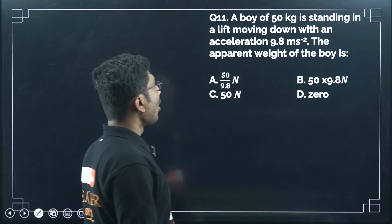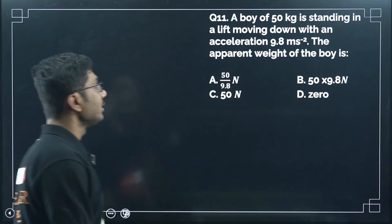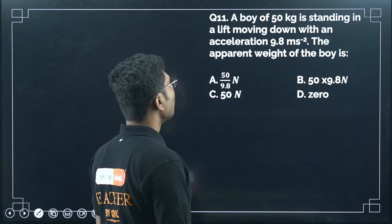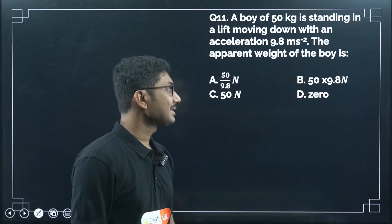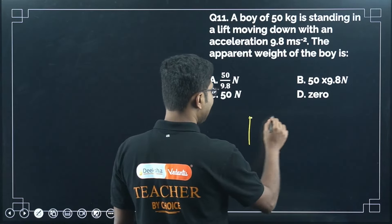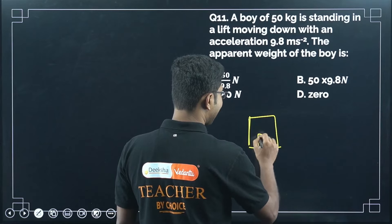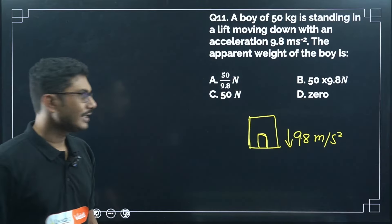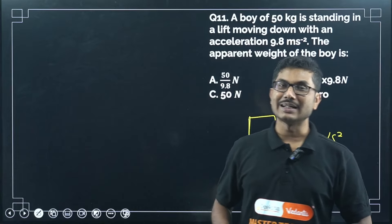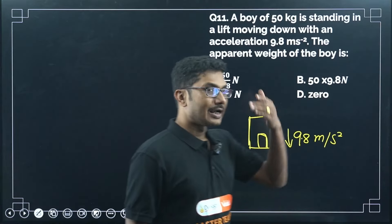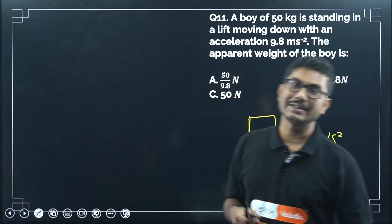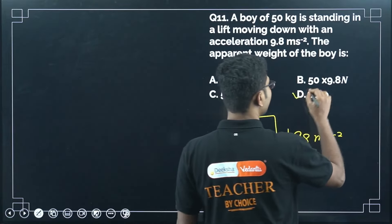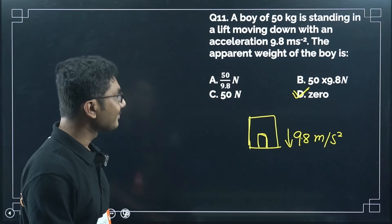Question 11: a boy of 50 kg is standing in a lift moving downward with an acceleration of 9.8 m/s². The apparent weight of the boy is asked. The gravitational acceleration is also 9.8 m/s², so the lift is in a state of free fall. In free fall, the apparent weight is zero. This was discussed in the lift motion class.